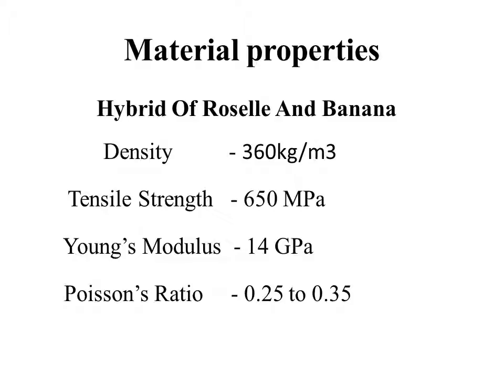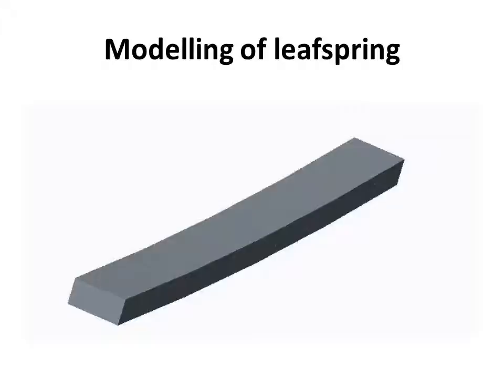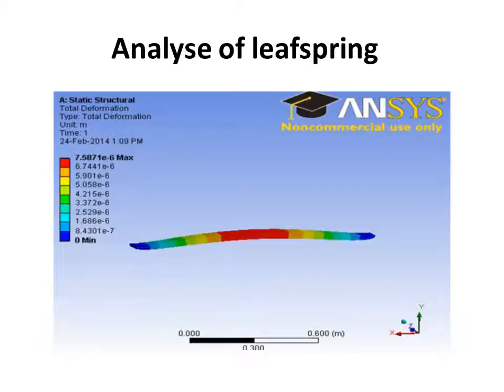Material properties of the hybrid of Rosal and banana fiber: density 360 kg/m³, tensile strength 650 MPa, Young's modulus 14 GPa, Poisson's ratio 0.2 to 0.3. This is because hybrid means a combination of two fibers — Rosal and banana — so the Rosal material properties and banana material properties are averaged to get the hybrid material properties. This is the modeling of the leaf spring using ProE software. The analysis model is completed and inserted into the analysis software.